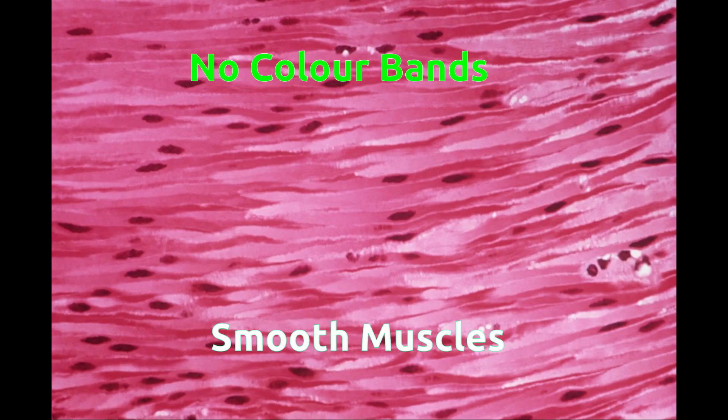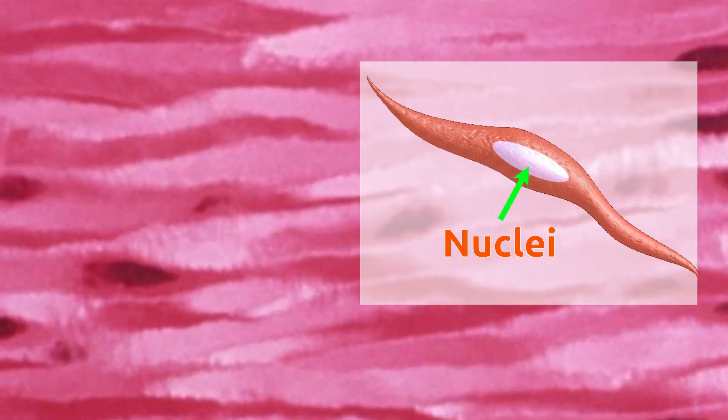Non-striated muscles. As the name suggests, the muscle cells of this tissue do not have any striation on the surface. These muscles are also known as smooth muscles. Unlike striated muscles, there is only one nucleus which is located at the center part of the muscle cell.